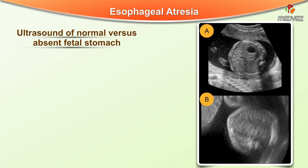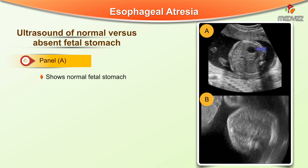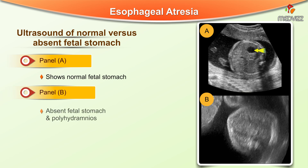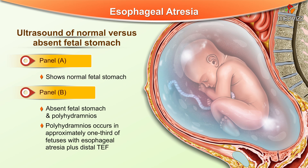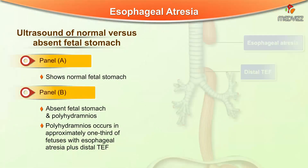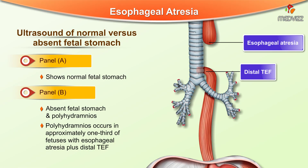In this ultrasound image, panel A shows a normal fetal stomach, whereas panel B shows absent fetal stomach and polyhydramnios. Polyhydramnios occurs in approximately a third of all fetuses with esophageal atresia with a distal tracheoesophageal fistula.